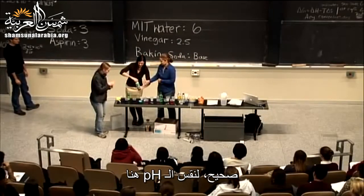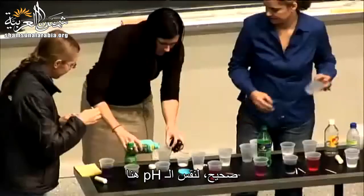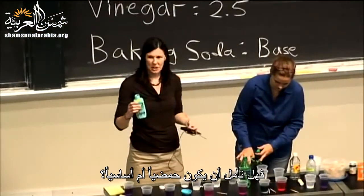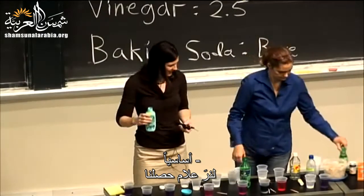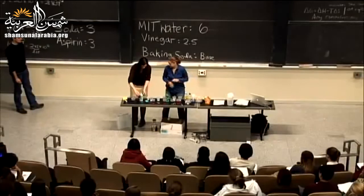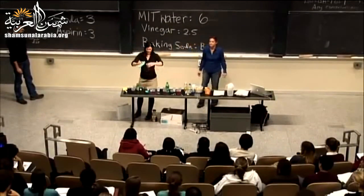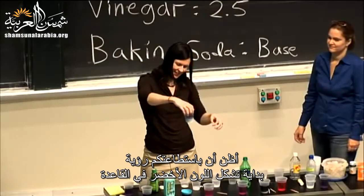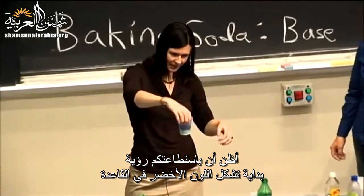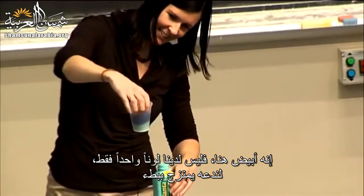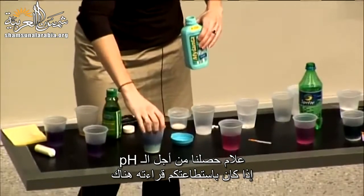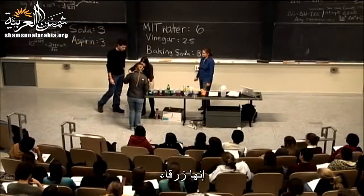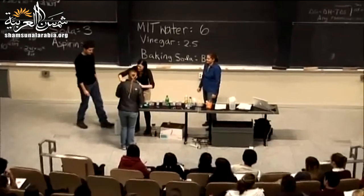If you're having an upset stomach, you might take Tums, Mylanta, or milk of Magnesia. If you take milk of Magnesia after an upset stomach, are you hoping it's acidic or basic? The reading here looks like a nine or ten — it's definitely basic, which you can see by the green color in the cabbage extract.